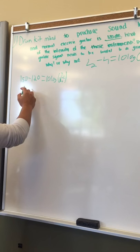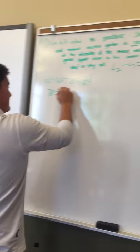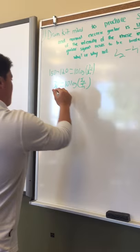So what we're going to do here is first and foremost get the subtraction out of the way first. So we're going to do 150 minus 120 which is equal to 30 equals 10 log I2 over I1.